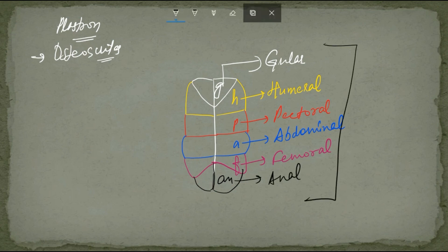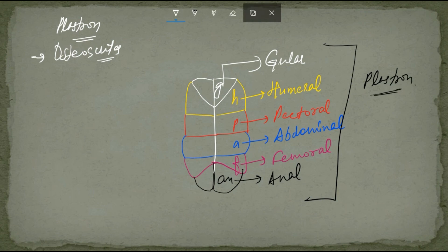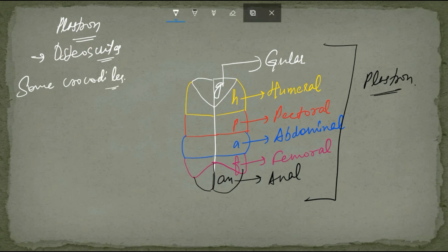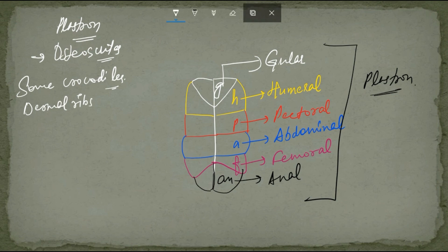All of these osteocutes make up the plastron of the turtle. Besides this, some crocodiles have bony plates embedded in their dermis, and some crocodiles also have dermal ribs present in the ventral abdominal region. These dermal ribs are called gastralia.